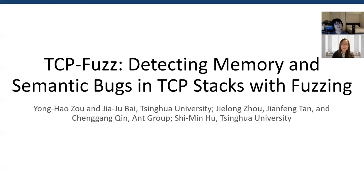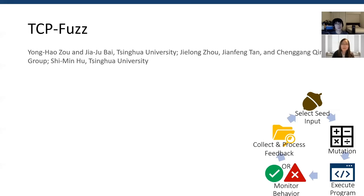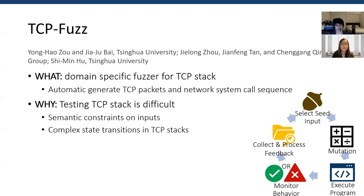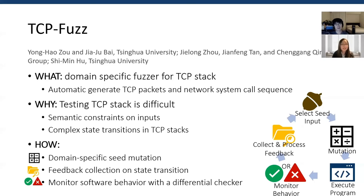The second fuzzing paper is TCP Fuzz: Detecting Memory and Semantic Bugs in TCP Stacks with Fuzzing, from Tsinghua University and Ant Group. It is about domain-specific fuzzer design. Testing TCP stacks is difficult: first, inputs including packets and system calls cannot be randomly generated as valid inputs, since network packets and system call sequences must follow certain dependencies. Second, a TCP stack has complex state transitions that are not trivial to thoroughly explore. TCP Fuzz uses a dependency-based strategy for domain-specific seed generation and mutation, collects state transitions as feedback to capture TCP stack behaviors, and uses a differential checker to assess semantic correctness.